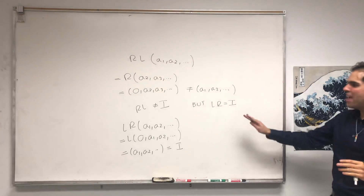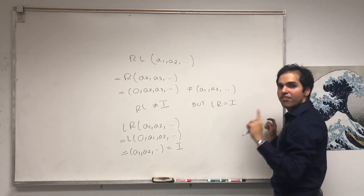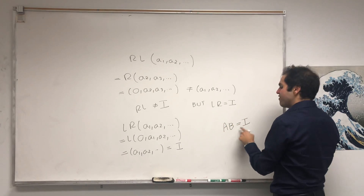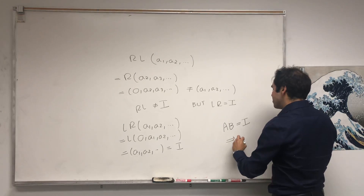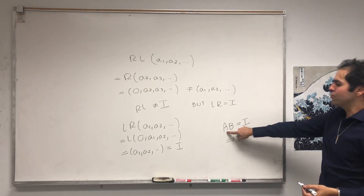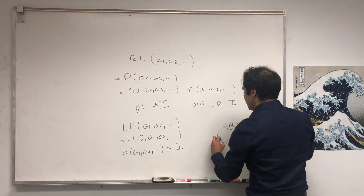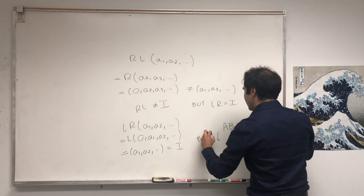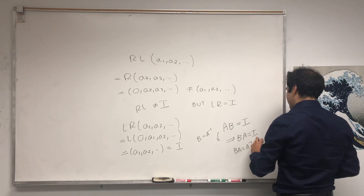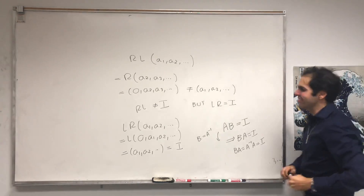So even though RL is not the identity, LR is. This is very different from the finite-dimensional case. In general, if you have two square matrices A and B of the same size, and AB equals the identity, it follows that BA also equals the identity — because B is A-inverse, and A-inverse times A is the identity. But this is very wrong in infinite-dimensional spaces.